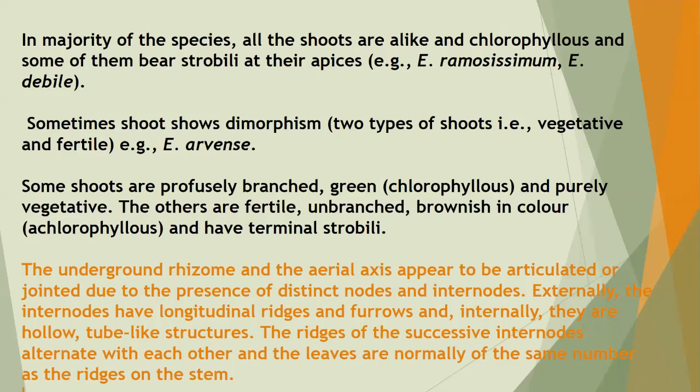Some shoots are profusely branched, green, chlorophyllous, and purely vegetative. The others are fertile, unbranched, brownish in color, and non-chlorophyllous, bearing a terminal strobilus. The underground rhizome and the aerial axis appear articulated or jointed due to distinct nodes and internodes. Externally, the internodes have longitudinal ridges and furrows; internally, they are hollow tube-like structures. The ridges of successive internodes alternate with each other.